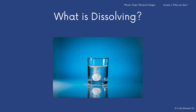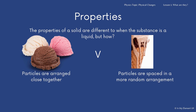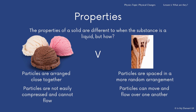With all these changes of state taking place, the properties of the substances can change. The properties of the solid are different to when that substance becomes a liquid. You've got an example of ice cream — three scoops of solid ice cream, and the liquid ice cream running down the cone. In terms of particles: in a solid, the particles are arranged closely together, whereas in a liquid they're in a more random arrangement, so they can move over one another and flow. Within the solid they can't flow, but in the liquid they can. So although the mass stays the same, the properties once they've changed state are different.